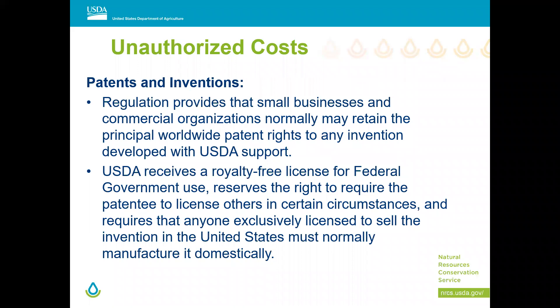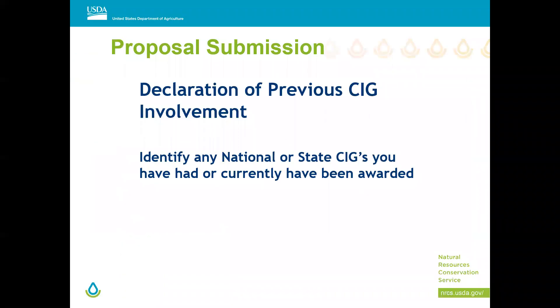Capital equipment is typically not an allowable cost. Any piece of equipment over $5,000 becomes accountable or capital property, and we're not interested in using grant money to buy applicants property or equipment. We've had budgets rejected for this — for example, electric tractors were rejected by our Grants and Agreements Division. So no capital equipment.